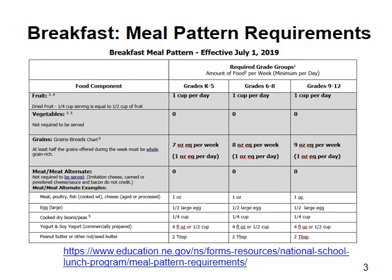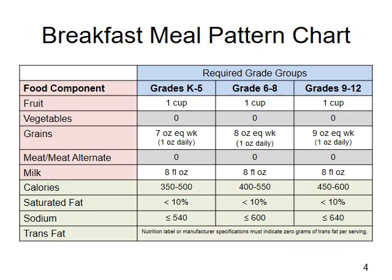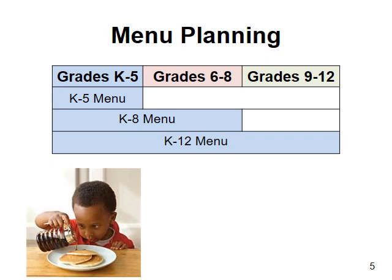Providing different serving options increases breakfast participation and students are settled down and ready to learn. A chart of the breakfast meal pattern requirements is provided with this training and is also available on our website. If you are new to planning breakfast meals, I recommend you print this chart and read through it. The food components and dietary specifications are in the column on the left, and the required grade groups are displayed across the top. These columns show the minimum amount of food required to be served daily and weekly. There are three required grade groups: K-5, 6-8, and 9-12. When you look at the daily requirements, there is overlap so that a single menu can be used for all grade groups at breakfast if you want to plan a K-8 or K-12 menu.